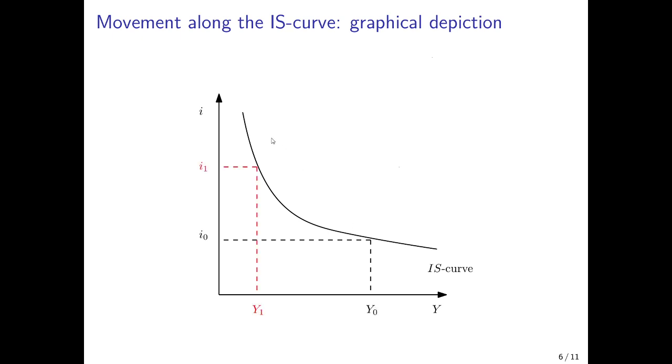Now the central bank increases the interest rate from I0 to I1. That decreases investment, leads to a reduction in income, and the associated income level is Y1. We have a movement along the IS curve from this point to this new point. The curve does not shift; it's a movement along the curve because Y adjusts for the changes in I.